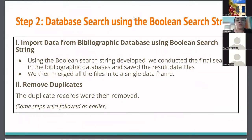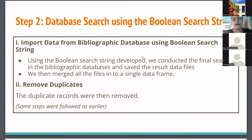The next step was to do a database search using the boolean search string. We imported data from bibliographic databases using the search string we created, conducted the final search, and saved the result data files. Finally, we merged all of them into one single data frame and again removed duplicates, following the same steps as discussed for the naive search.